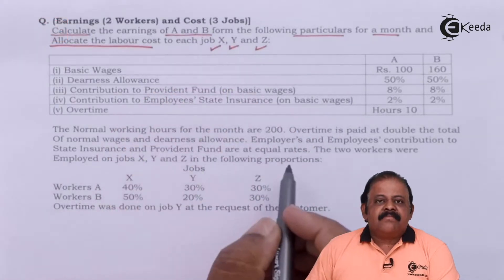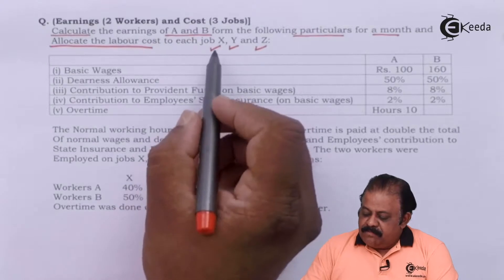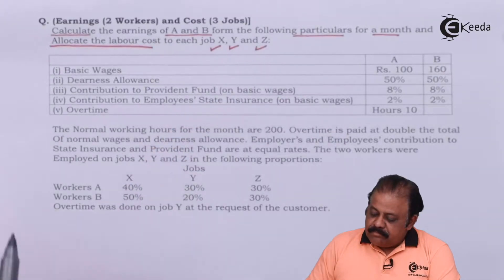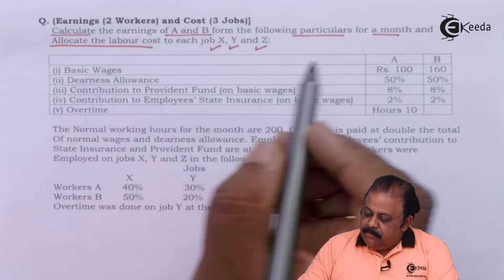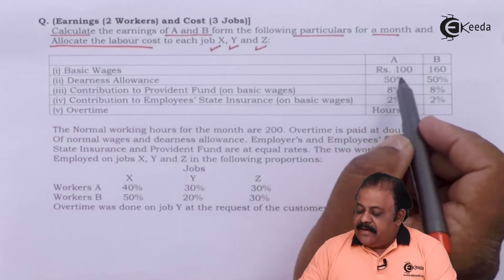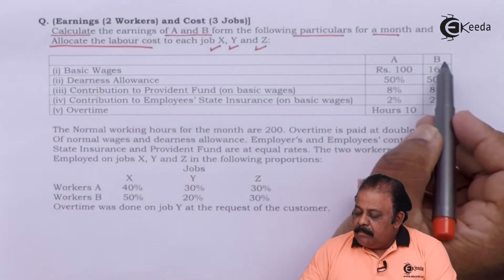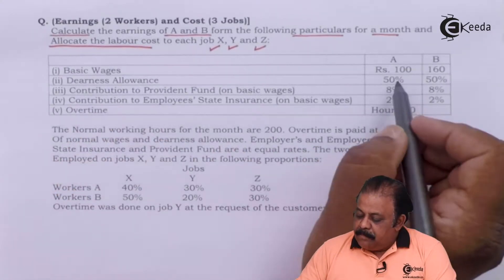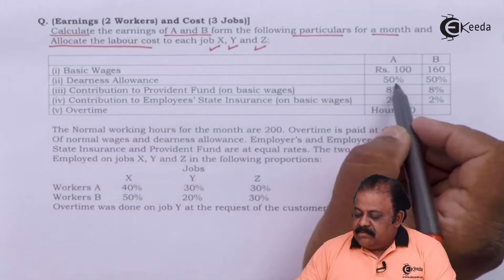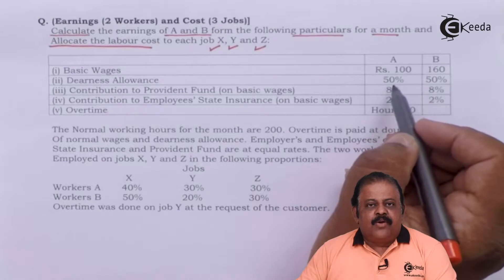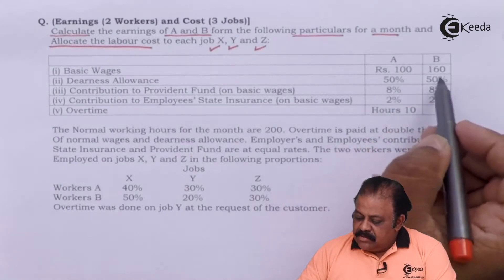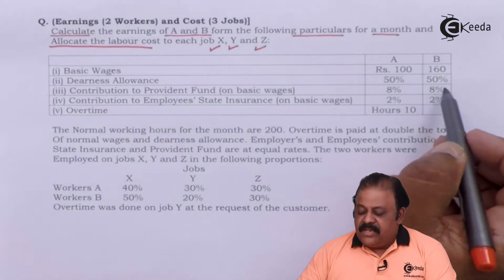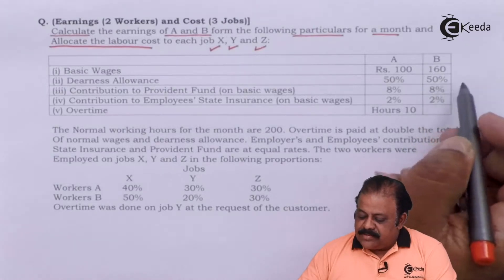There are two workers A and B undertaking three jobs X, Y, and Z. Basic wages: A = Rs. 100, B = Rs. 160. Dearness allowance is 50%, so that is 50% of Rs. 100 = Rs. 50 for A, and 50% of Rs. 160 = Rs. 80 for B.